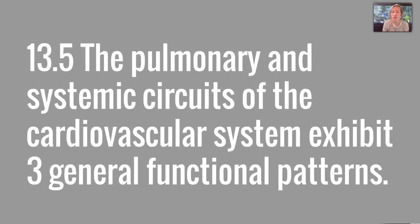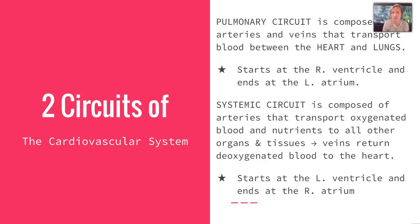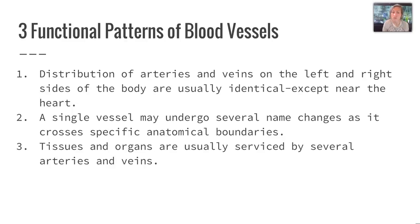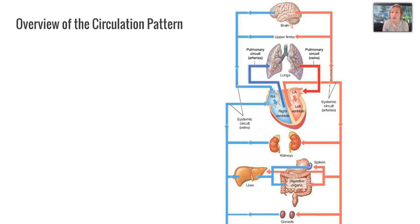Section 13.5 reviews the pulmonary and systemic circuits, and there are three general functional patterns within them. Jot down notes about the difference between the pulmonary and systemic circuit, where they start and end, and what their specific jobs are. The three functional patterns include: the distribution of arteries and veins on the left and right sides of the body are usually identical except near the heart; a single vessel may undergo several name changes as it moves through anatomical boundaries; and tissues and organs are usually serviced by several arteries and veins. Here's an overview diagram of the circulation pattern.